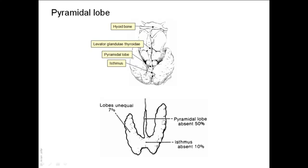However, this is not the main reason why the thyroid gland moves up with swallowing. It is not because of the presence or absence of this muscle, but rather because the thyroid gland is contained within the pre-tracheal fascia, which is attached to the larynx and the hyoid bone, which move upward during swallowing.